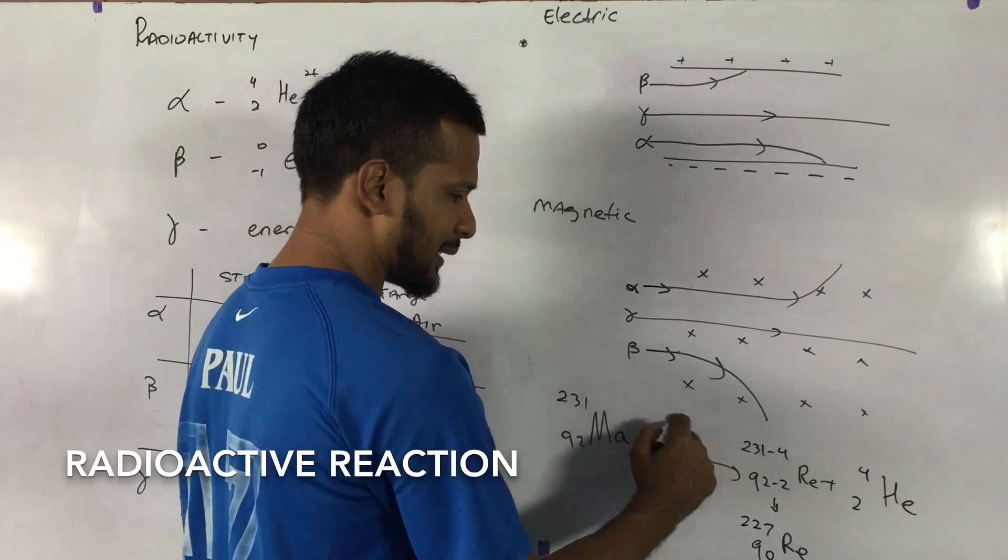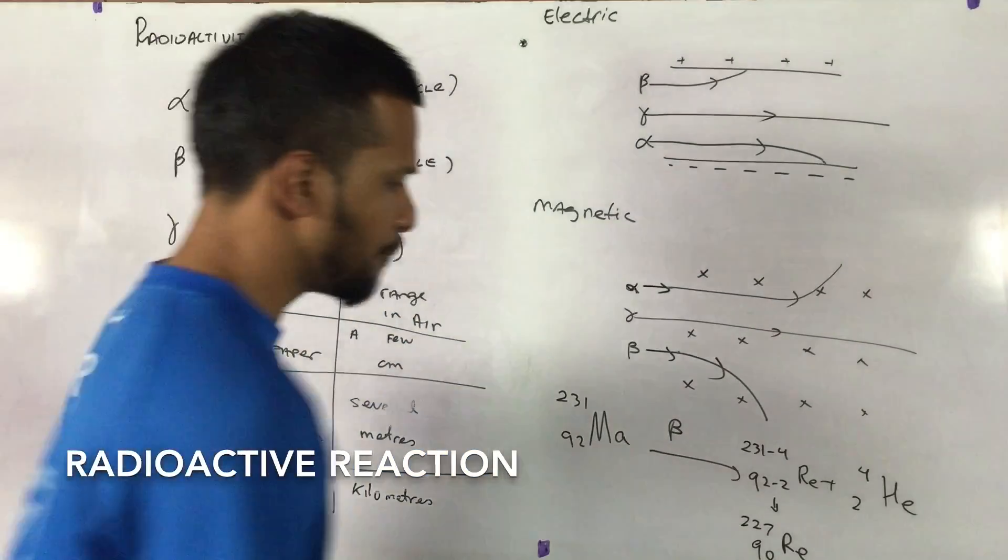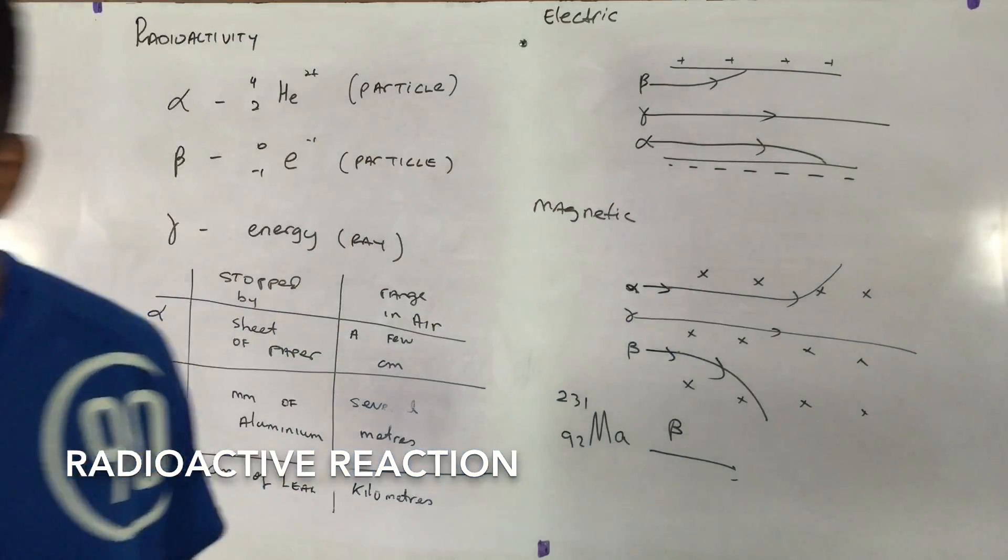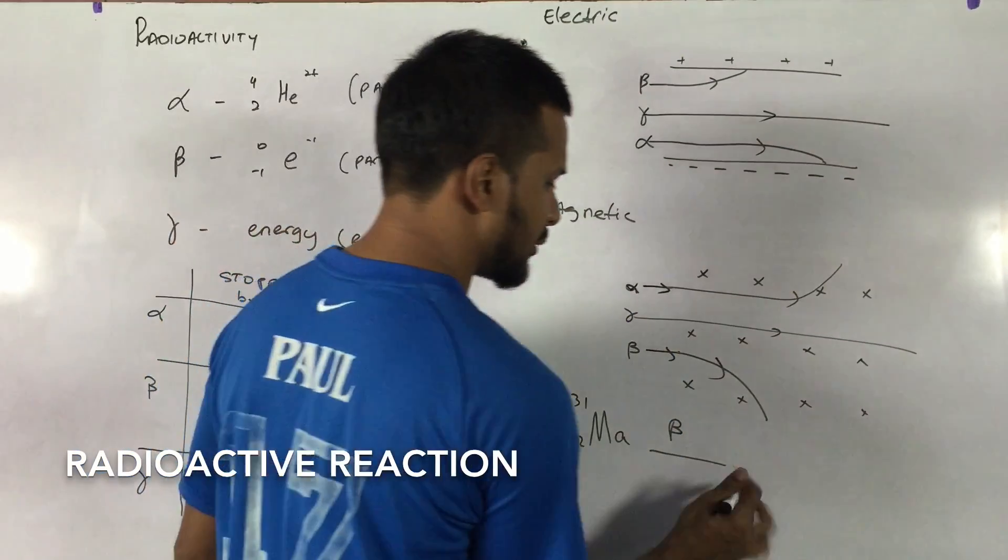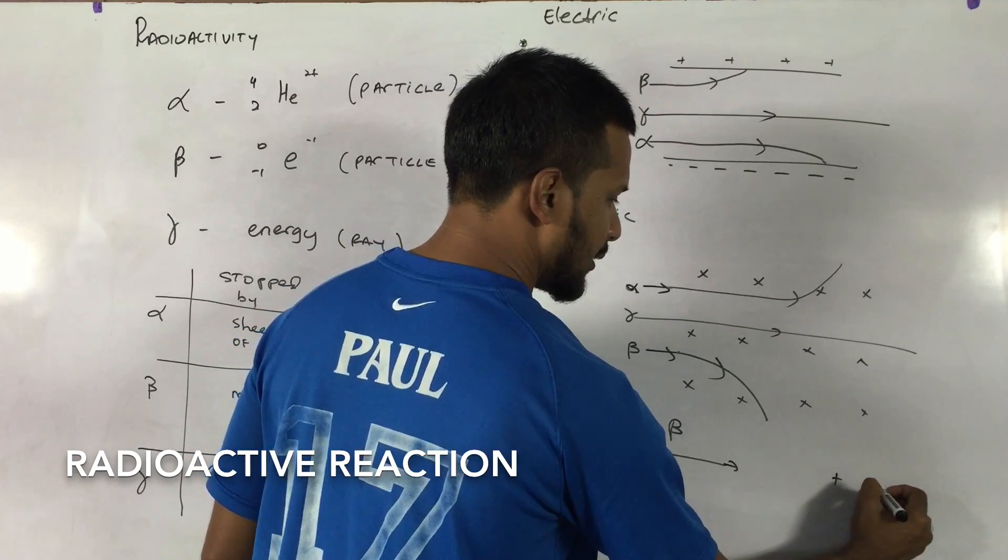Let's say now this Madrid particle lost a beta particle. What will happen? A beta particle is what? A beta particle is simply an electron.